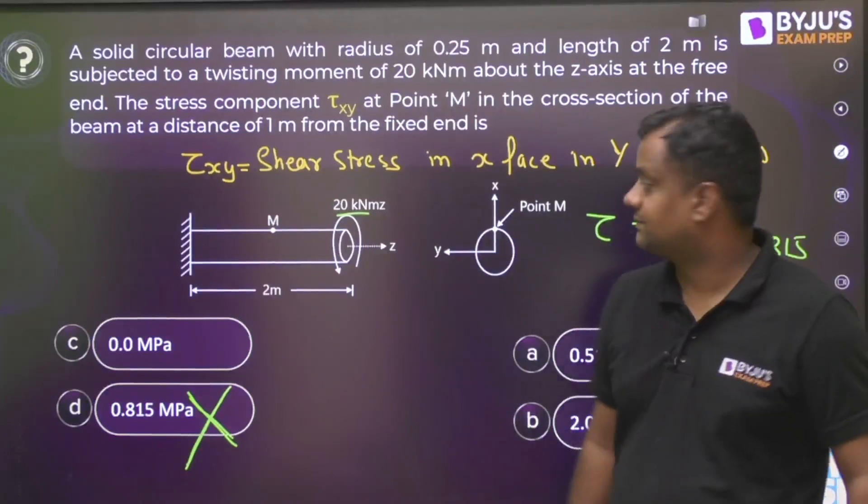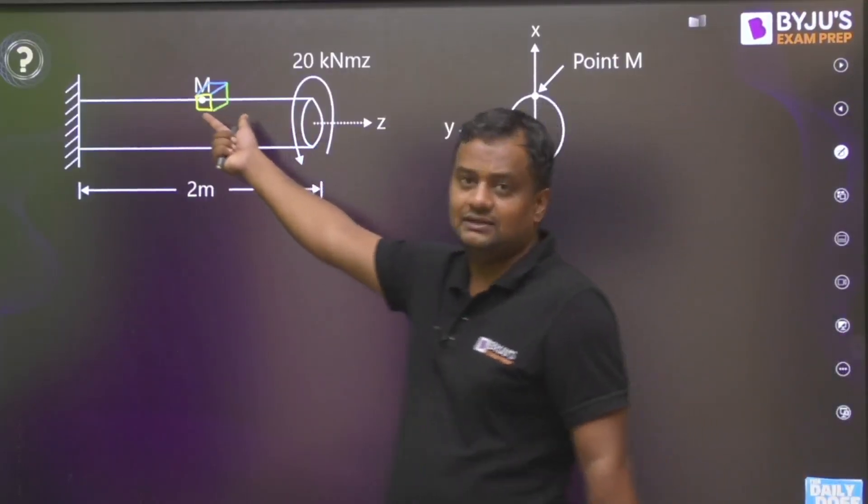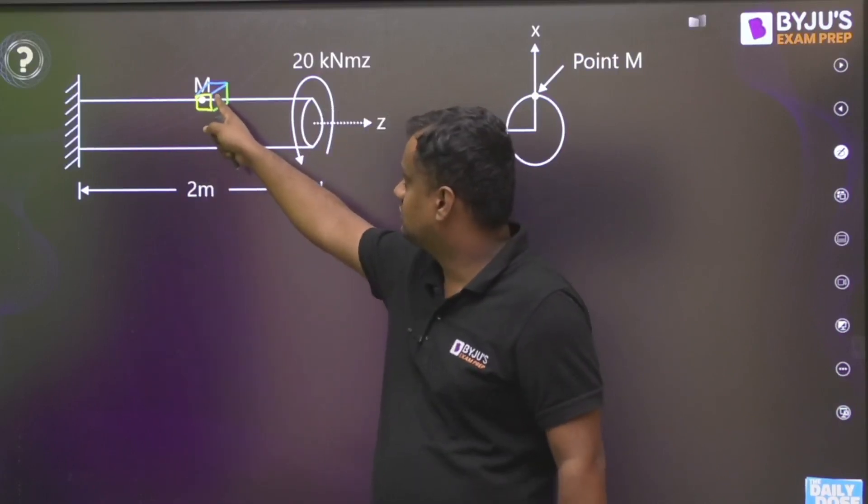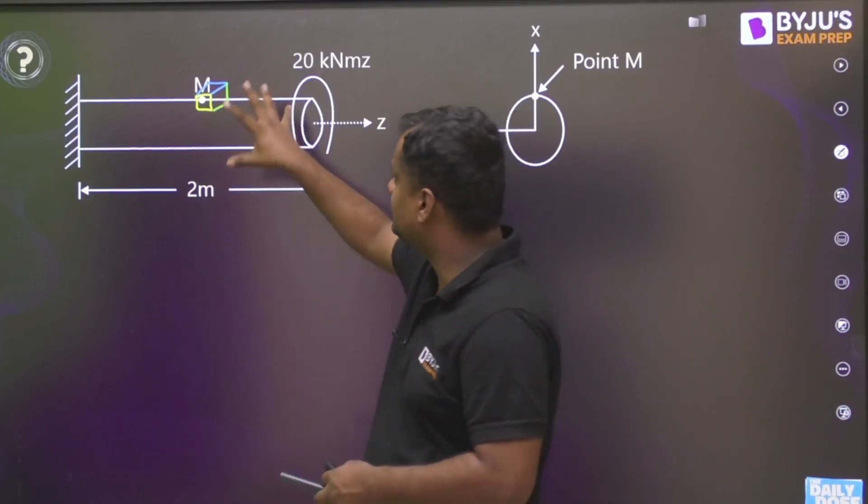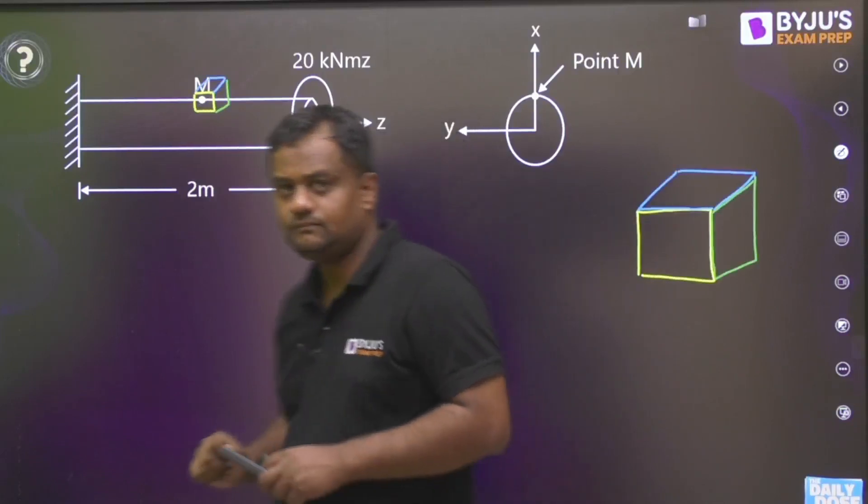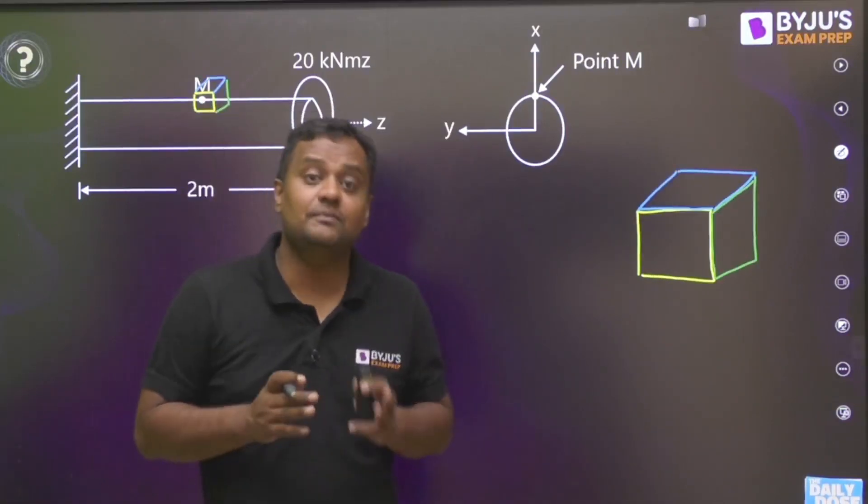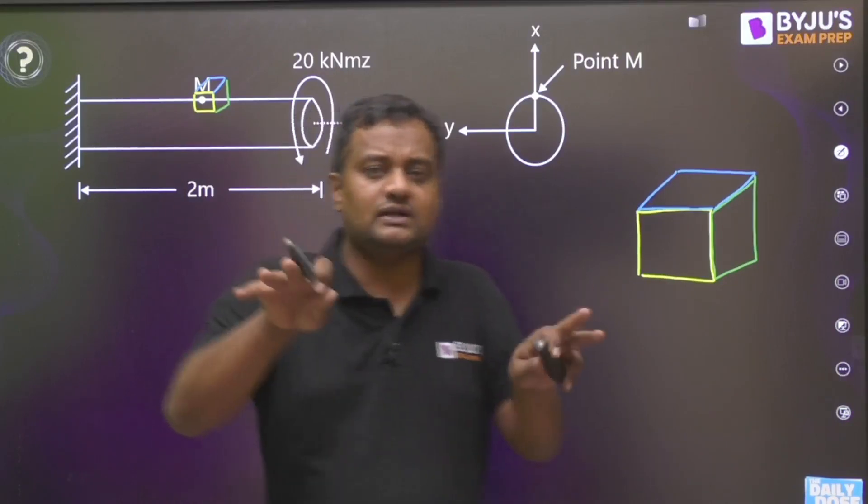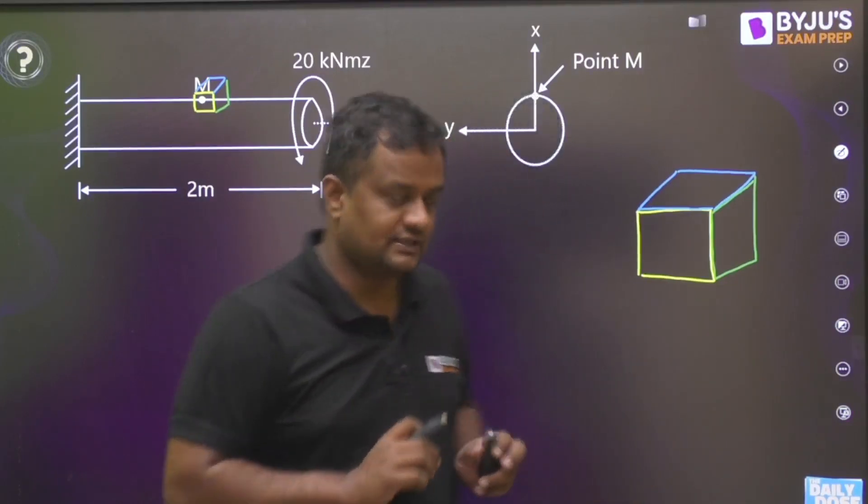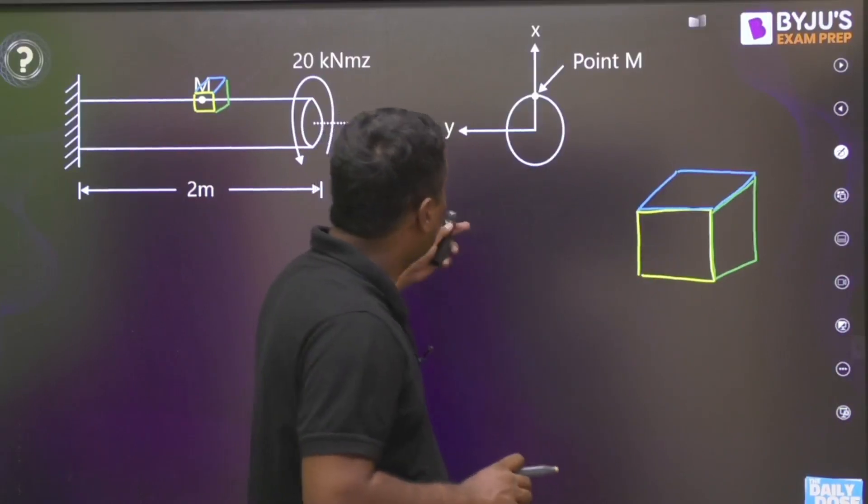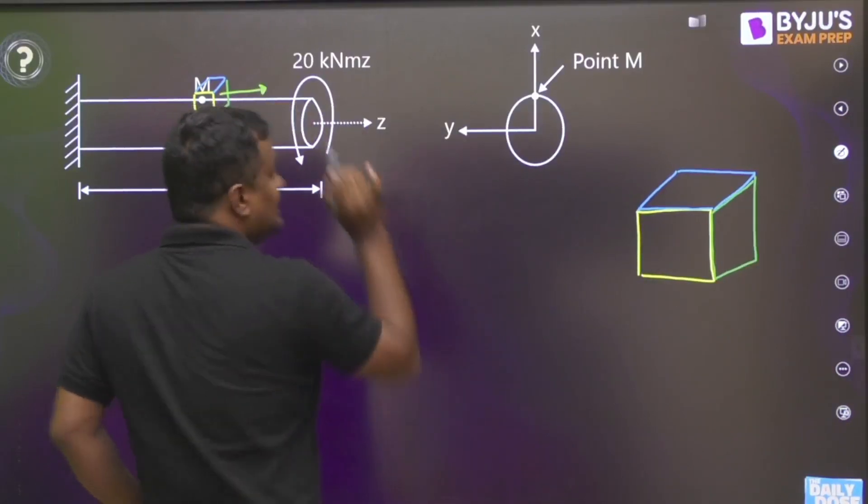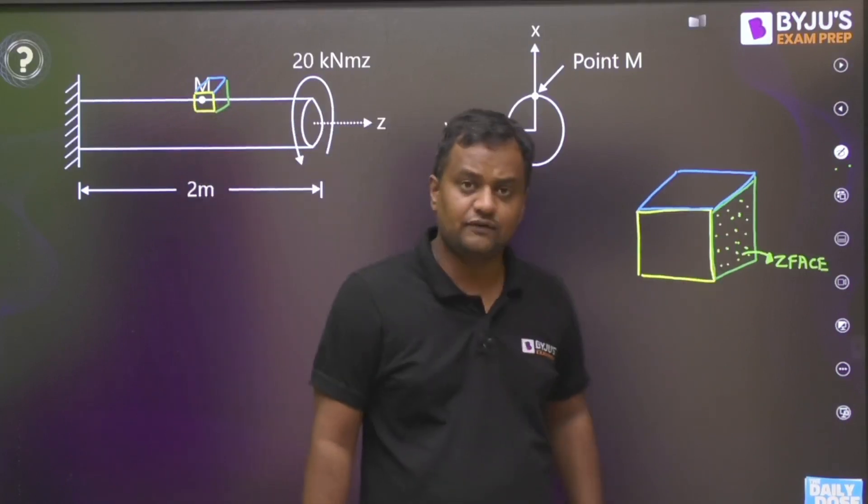Now what is the correct answer? Before that, let me tell you some concept. Select this point like this. If I just show yellow face, green face, and blue face, I zoom this and take it here. Now any face name is given by the outward normal to it. From that face, whatever is the outward normal, that is the name of the face. Suppose this green face, the outward normal from the green face is in Z direction, so this face is Z face.